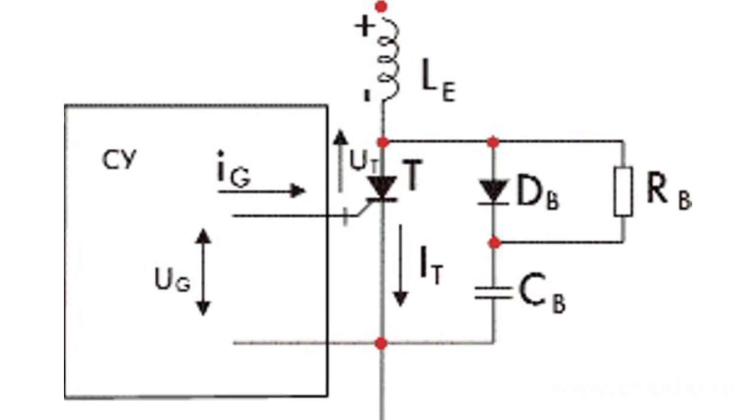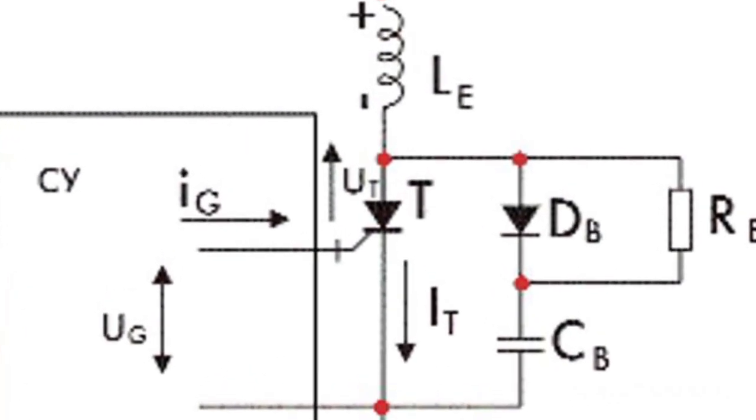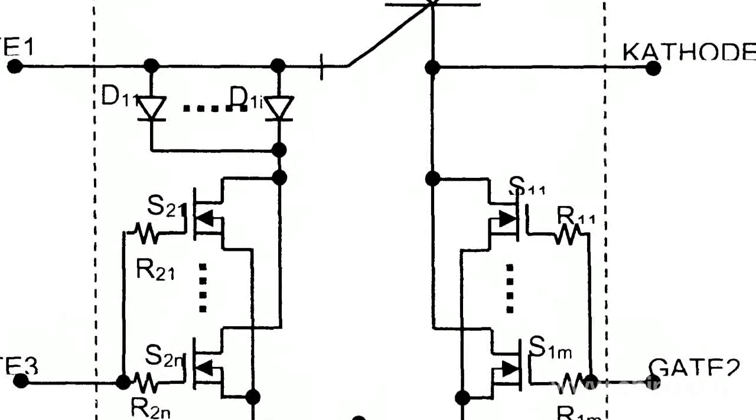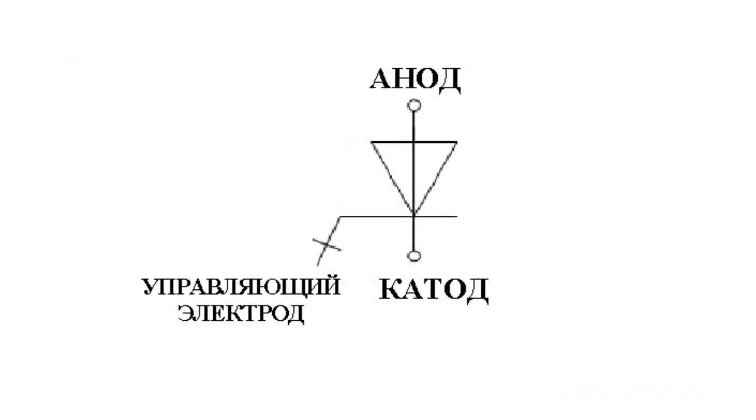Thereby, GTO thyristors in DC circuits and inverters do not require any special current quenching means. The figure shows a conventional graphical model of a GTO thyristor.